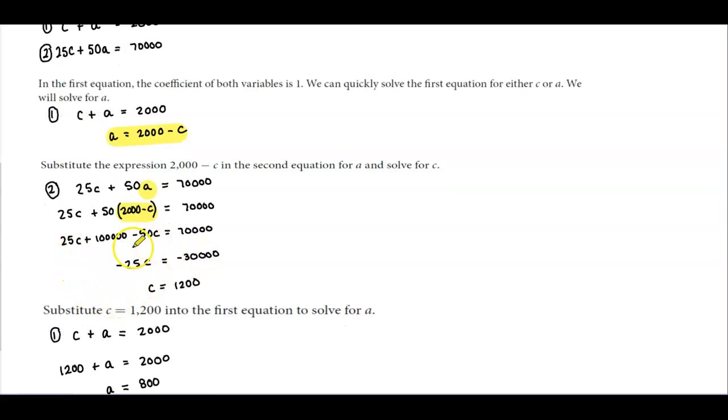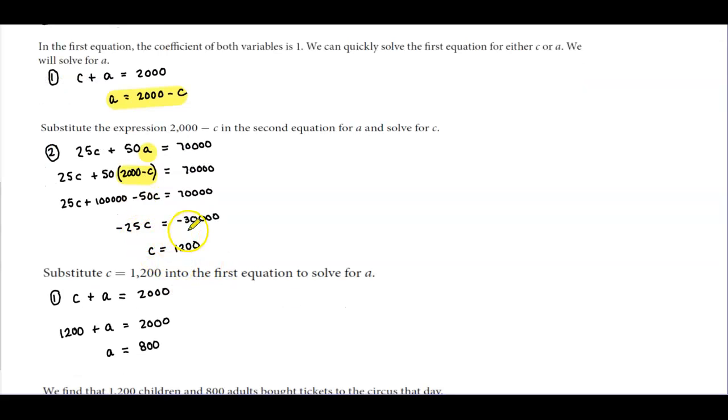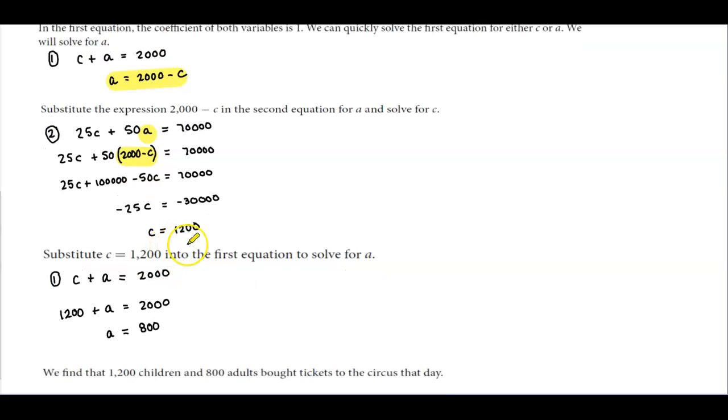We're going to combine like terms. 25C - 50C is -25C. Then we subtract 100,000 from 70,000, which gives us -30,000. Dividing both sides by -25, we get positive 1,200. So C = 1,200.